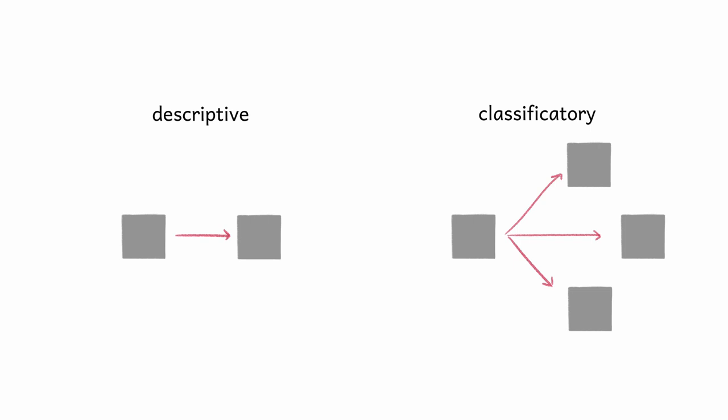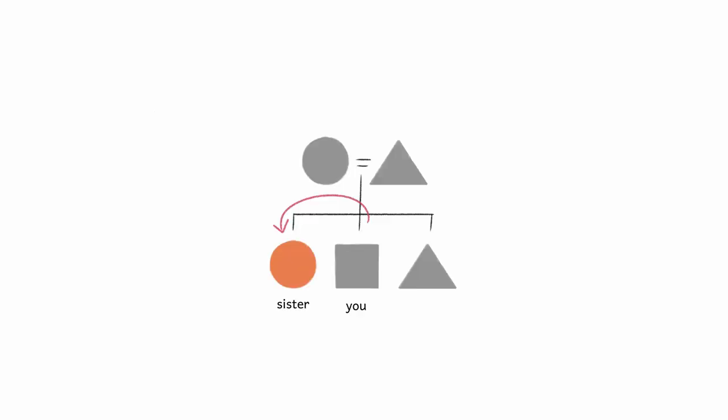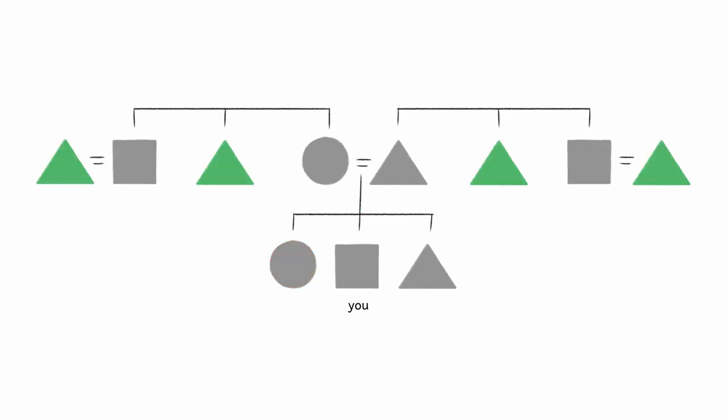First off, you've got descriptive terms and classificatory terms. Descriptive terms only refer to one kind of relationship. In English, a sister is defined as a female relative of your generation with the same parents as you. But classificatory terms can refer to multiple kinds of relationship.